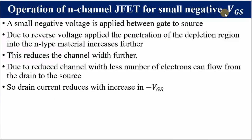If we increase gate-to-source voltage to a small negative value from zero, we apply a negative voltage between gate and source, reverse biasing the gate-to-source junction. This causes the depletion region to expand into the N-type material, reducing the channel width further. As the two depletion regions grow toward each other, drain current decreases. So drain current reduces with an increase in negative gate-to-source voltage for an N-channel JFET. For a P-channel, drain current reduces with an increase in positive VGS.